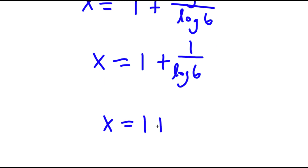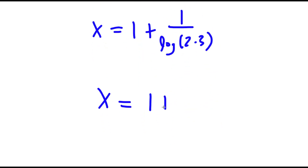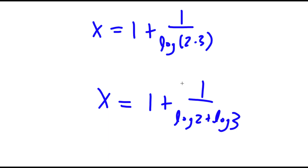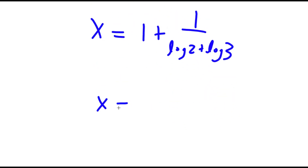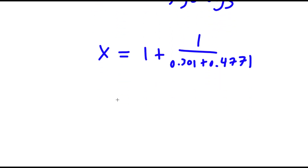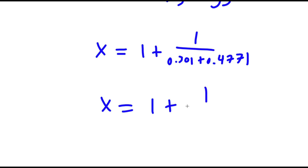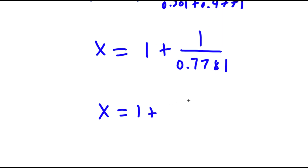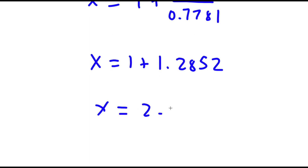And log 6 we can rewrite as log of 2 times 3, so now this is the same thing as log 2 plus log 3. Log 2 equals 0.3010 and log 3 equals 0.4771. So x is equal to 1 plus 1 over 0.7781. Now, 1 over 0.7781 is equal to 1.2852. So 1 plus 1.2852 is equal to 2.2852.